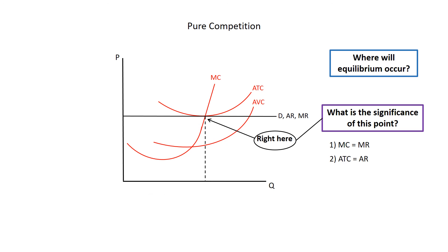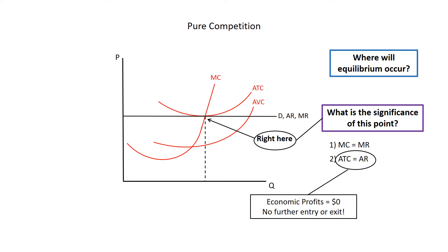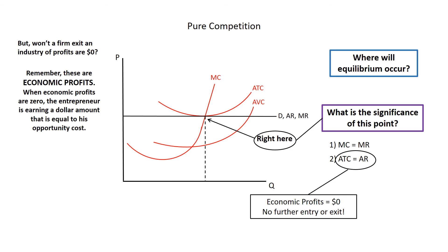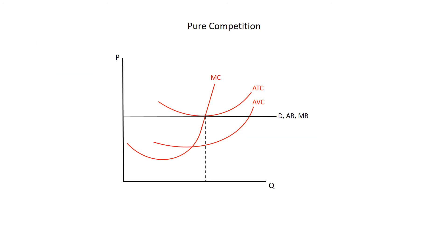Notice also that average revenue at this level of output is equal to average total cost, meaning economic profits are zero. With zero economic profits, there will be no incentive for resources to enter the industry. But won't firms exit if profits are zero? No — remember, these are economic profits, not accounting profits. When economic profits are zero, the entrepreneur is earning a dollar amount equal to his opportunity cost. Here is a firm in equilibrium in a purely competitive market, earning zero economic profits. He is earning accounting profits equal to what he would earn at his next best opportunity — economists refer to this as normal profits. Normal profits will neither attract nor repel resources; thus the firm is in equilibrium.